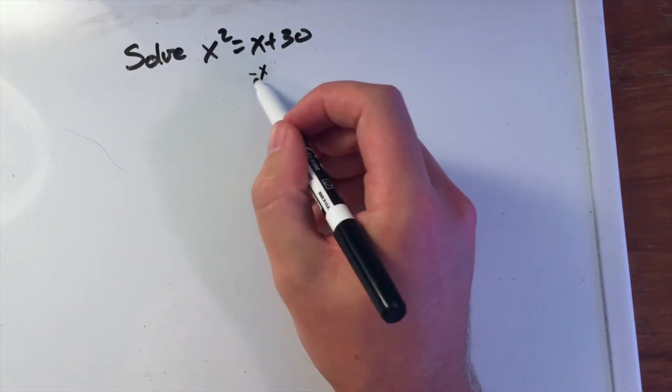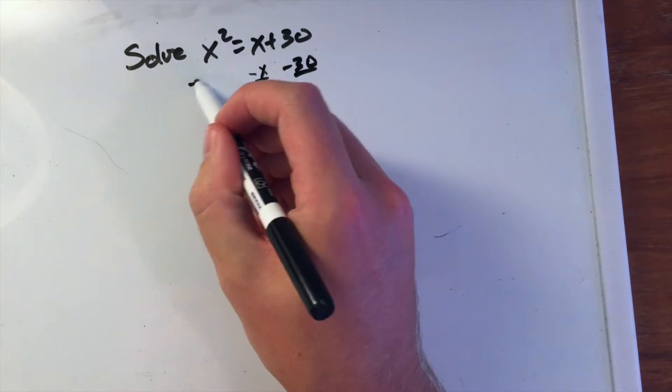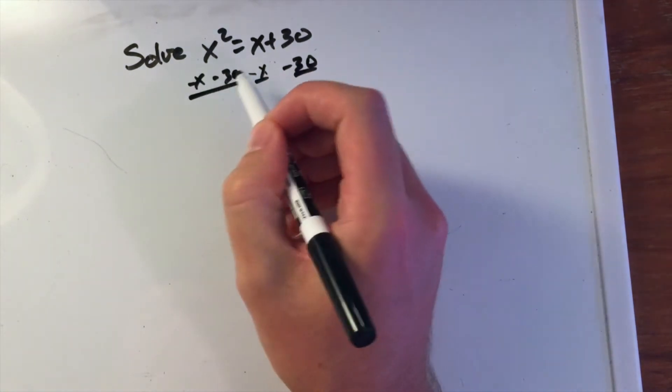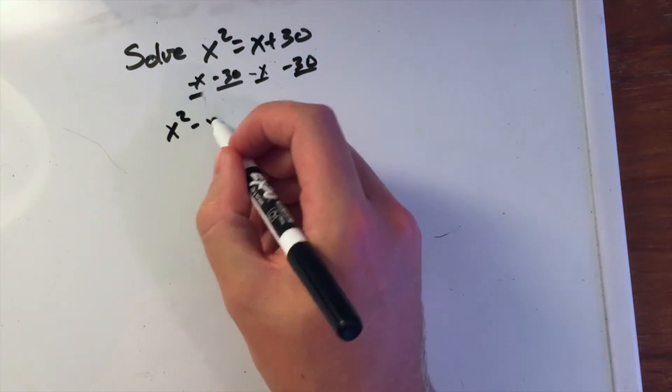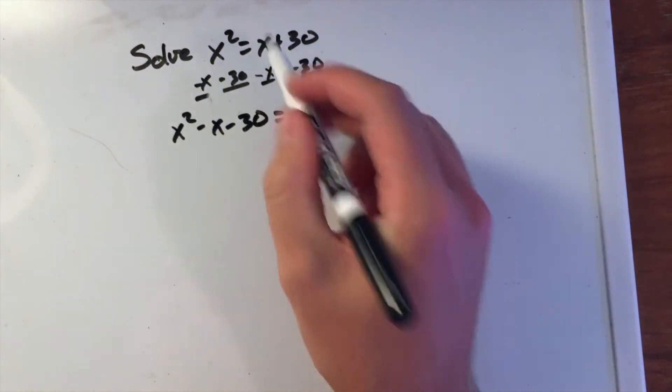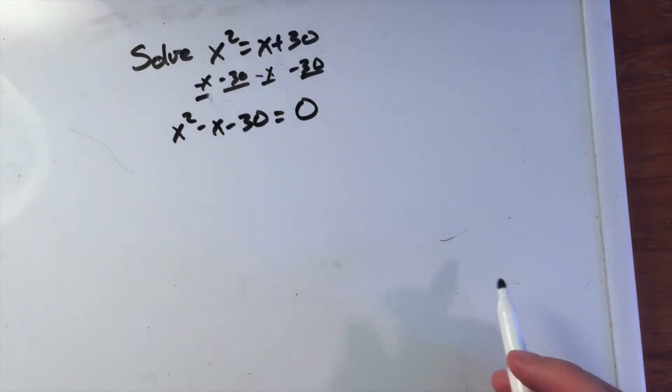If we subtract an x and subtract a 30 from both sides, then we have x squared minus x minus 30 equals zero.